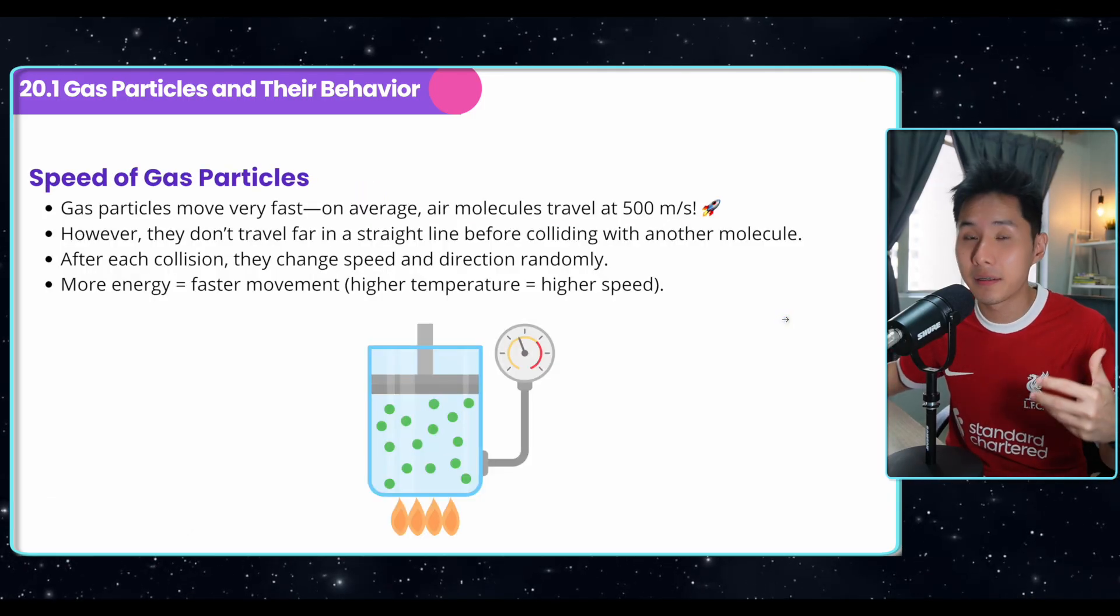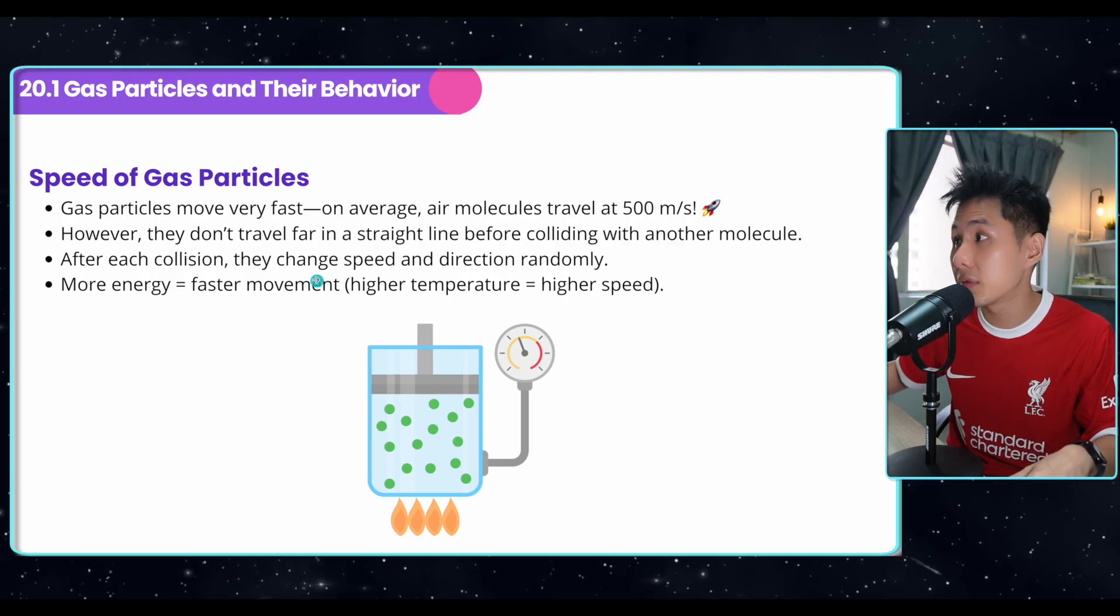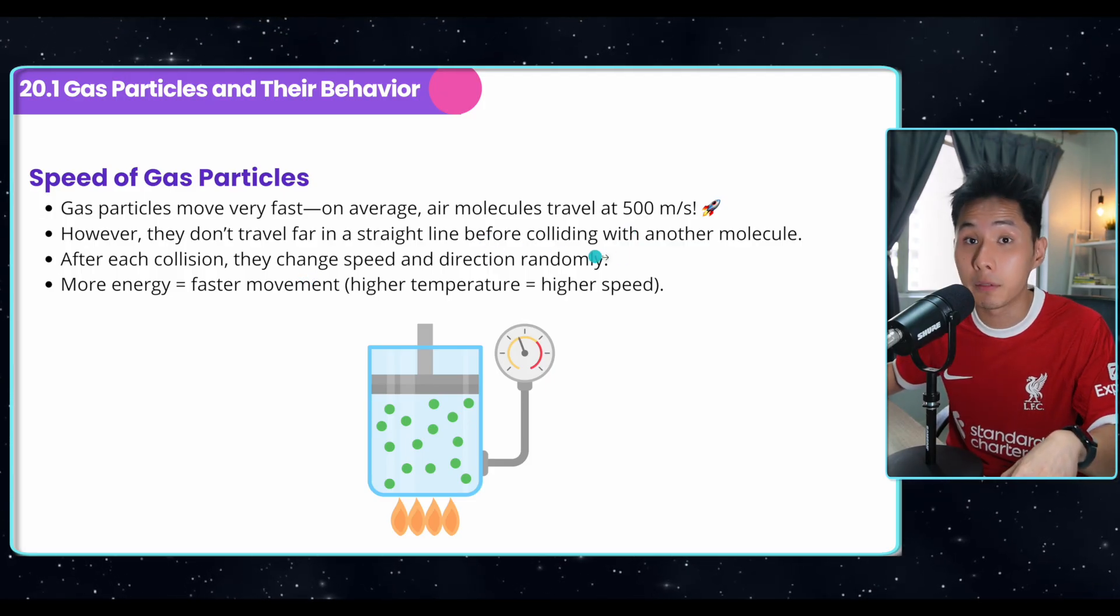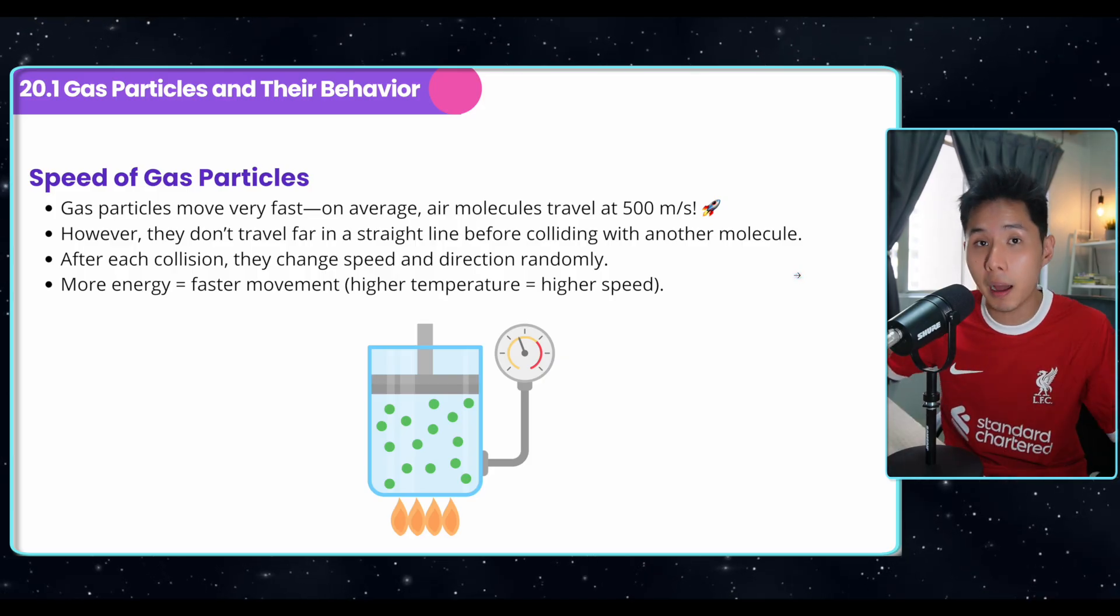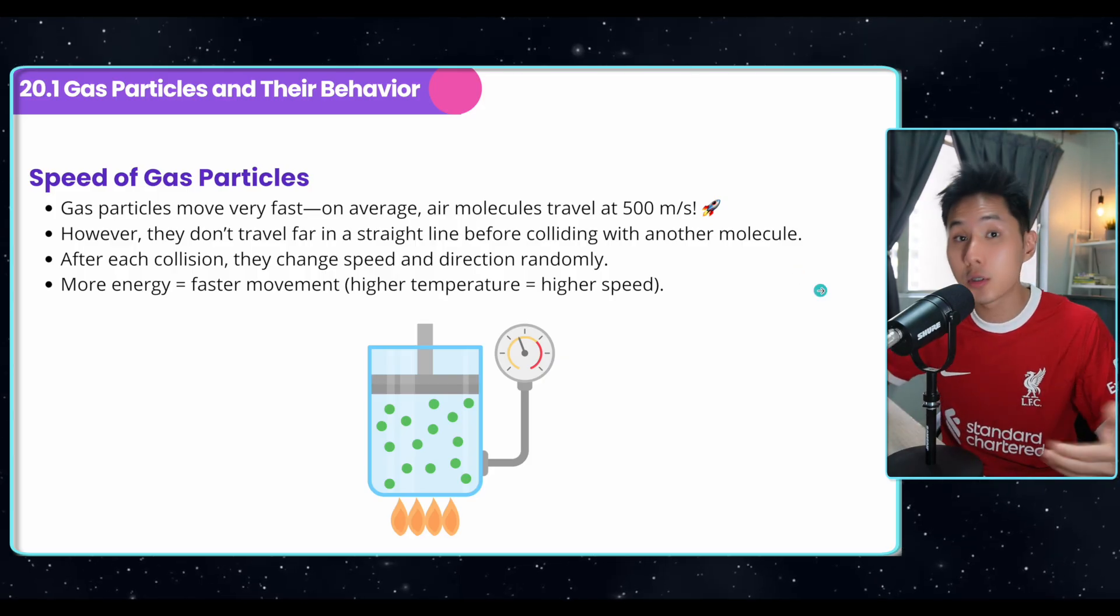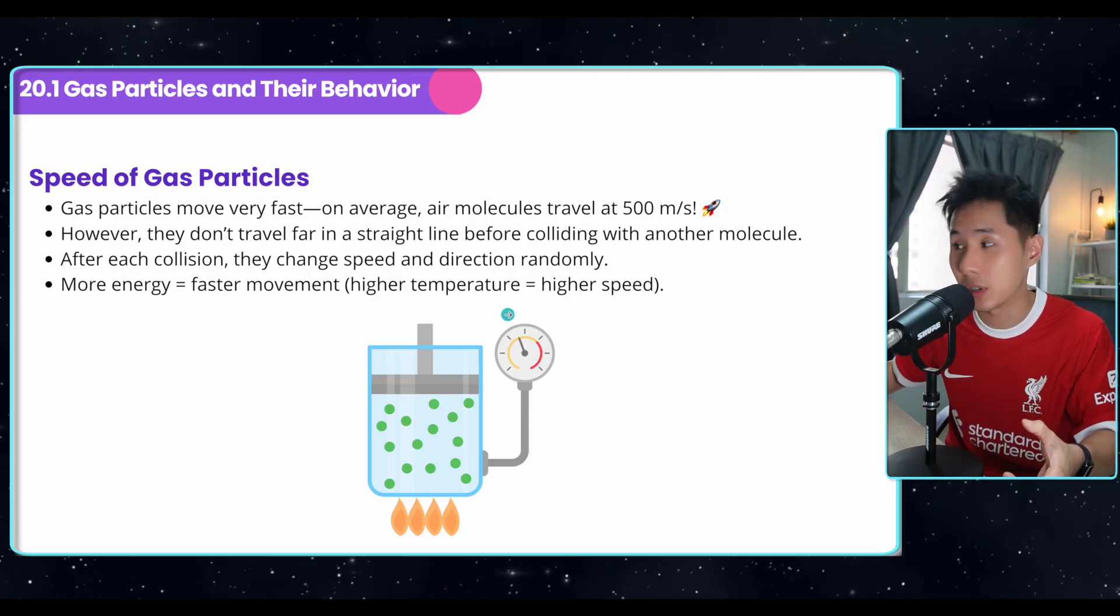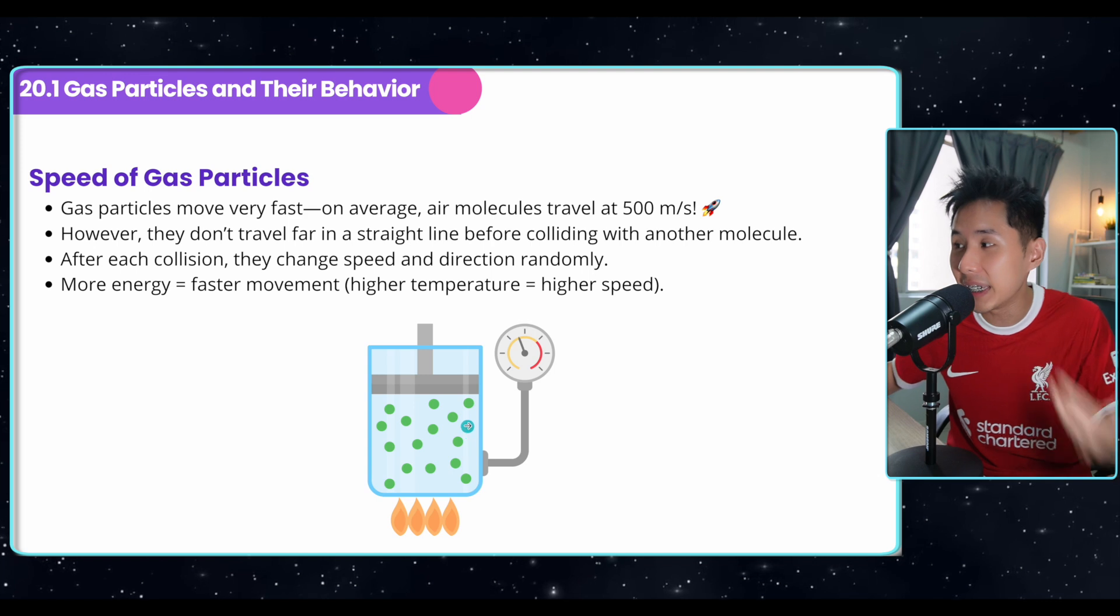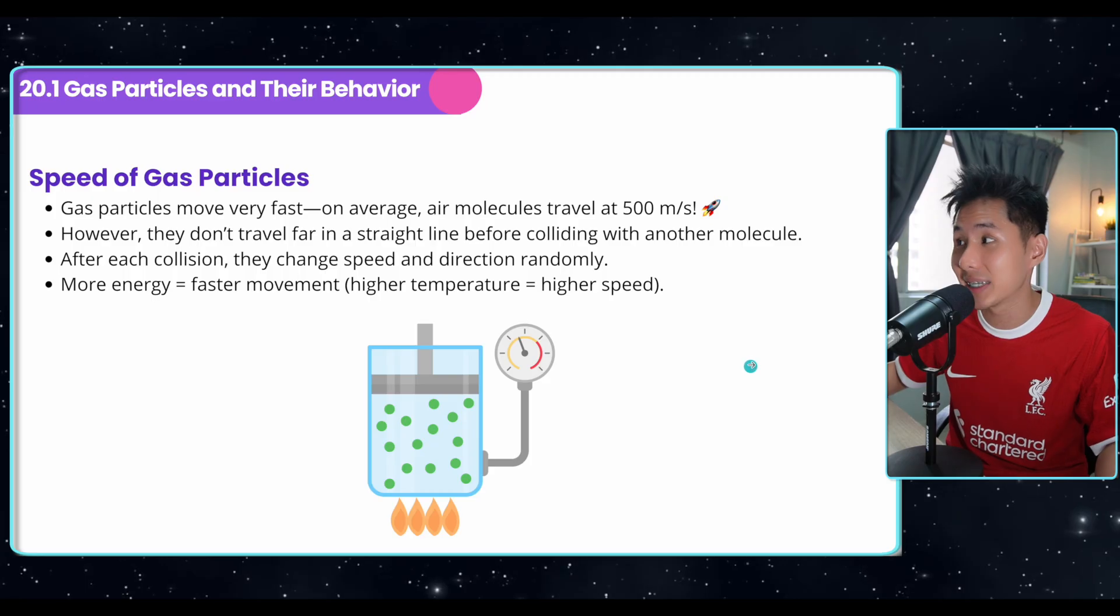So air particles move at a very fast speed at around 500 meter per second. However, they don't travel far in a straight line before colliding with another molecule. And after each collision, either with the wall or another particle, they change direction. The more energy they have, the faster they move, which means higher temperature. So I have this diagram here. If you were to heat up the gas particle, they move very rapidly. That increases the temperature of the gas.